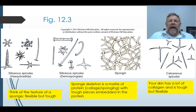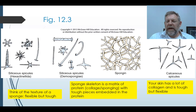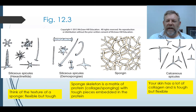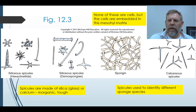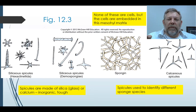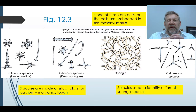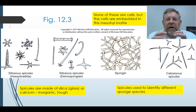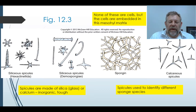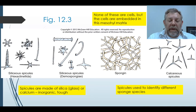Sponges don't have an internal skeleton — just this matrix of protein with tough pieces embedded in it. Think of your skin: it has a lot of collagen and it's tough and flexible — kind of a similar idea. None of these are cells; they're things made by the sponge cells that form the mesohyl matrix, and the sponge's cells are embedded in this. The spicules are made of silica or glass, or calcium — inorganic and mineralized. The spicules are important because they're how we identify different sponges.